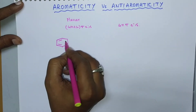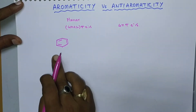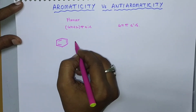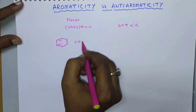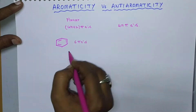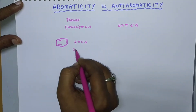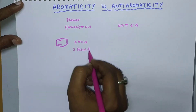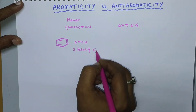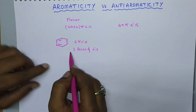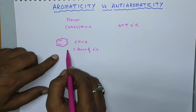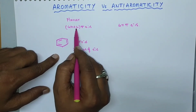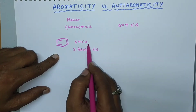If you take benzene, it consists of 4n+2 π electrons — that is 6 π electrons, which means 3 pairs of electrons. So it is an aromatic compound because it satisfies 4n+2 π electrons with n equal to 1, giving 6 electrons.